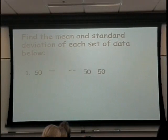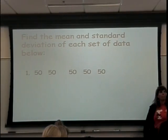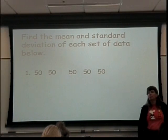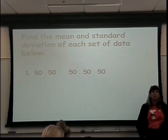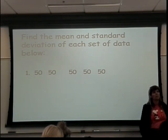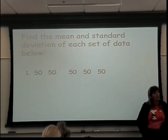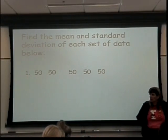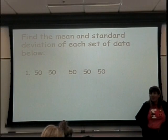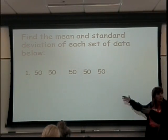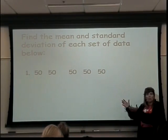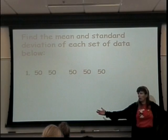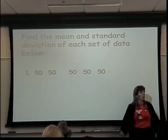Here's a set of data: 50, 50, 50, 50, 50, and 50. What's the mean? What do you expect its standard deviation to be? In other words, how spread out is the data? It's not spread out at all. So its standard deviation is going to be zero. If there's no spread, the standard deviation is zero.